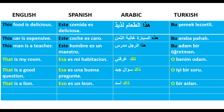So we are finished with 'this', which is used for referring to the nearest things. Now we are going to start with 'that', which is used when you want to demonstrate or show something that is far away.